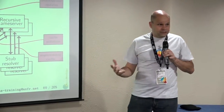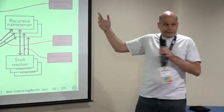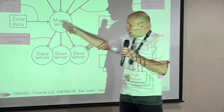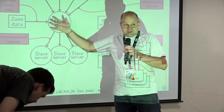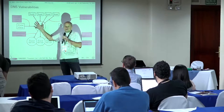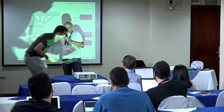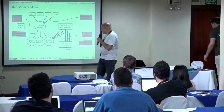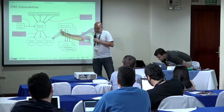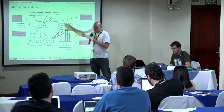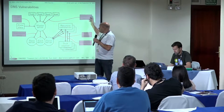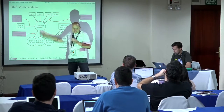Where can security problems arise? Everywhere. You could load wrong zone data. There could be an impersonated master that loads wrong data to a slave server. There is cache pollution — between queries sent by recursive name servers and the slave servers answering them. And dynamic updates could also be impersonated.